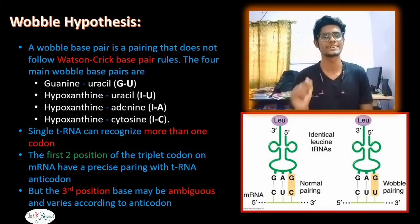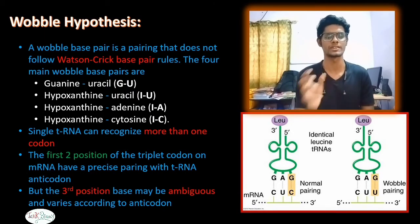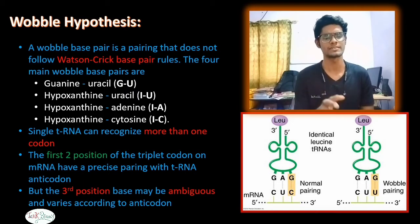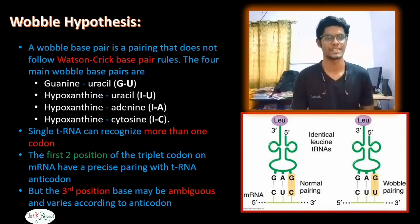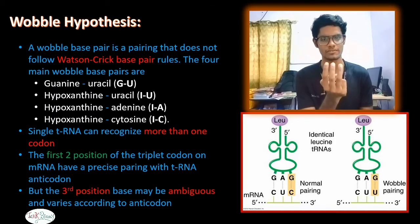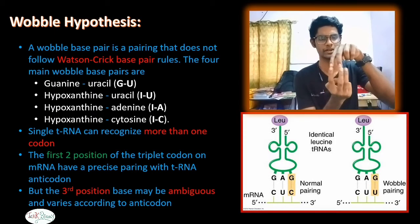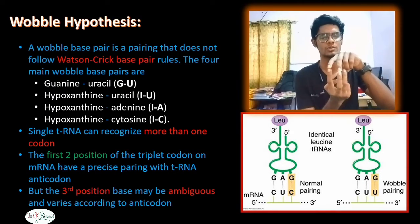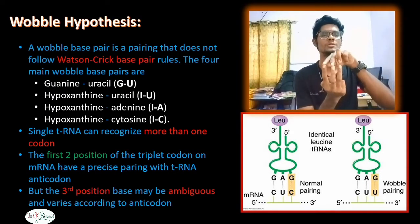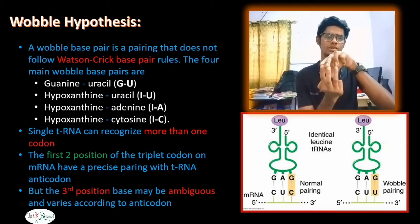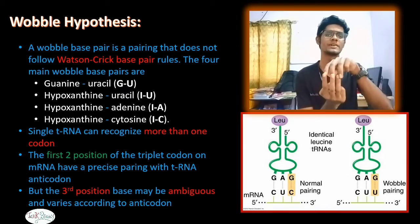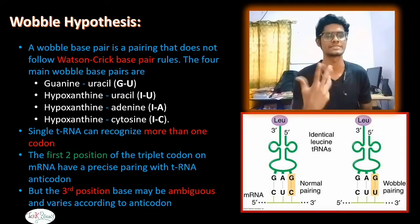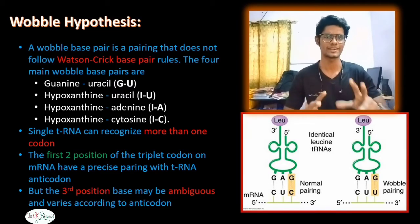In the wobble hypothesis, the first two positions of the triplet codon on mRNA have precise pairing with tRNA. But the third position base can be ambiguous and varies according to the anti-codon. This means a single tRNA can bind to more than one codon, which explains degeneracy in the genetic code.